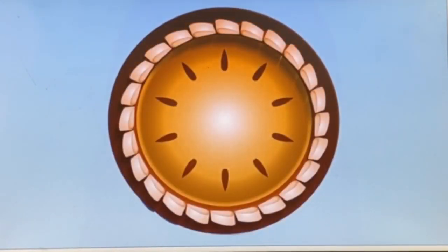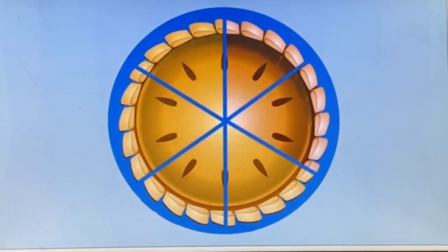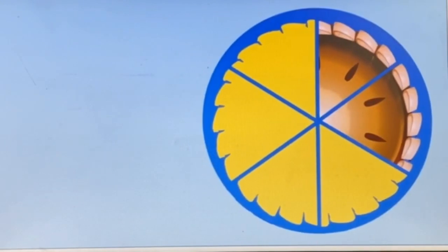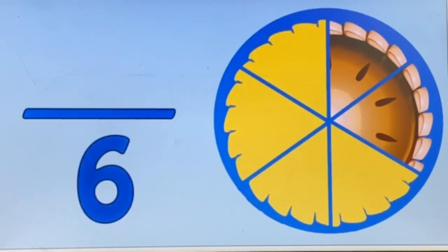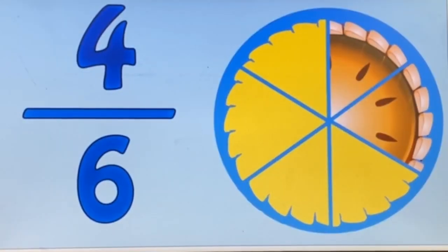Let's try another example. This pie is divided into six pieces and you eat four pieces of it. If there were six pieces of pie and you eat four, what is the denominator of your fraction? That's right — six. What is the numerator? Yep, it's four. That means that you ate four sixths of the pie.